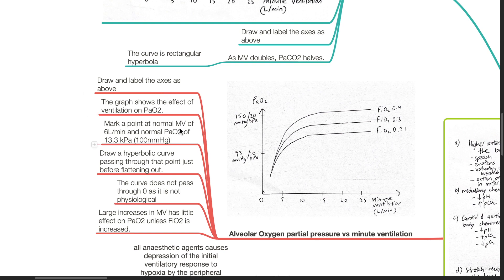First, mark a point at normal minute ventilation of 6 liters per minute and normal PaCO2 of 100 mmHg. Draw a hyperbolic curve passing through that point and just before flattening out.